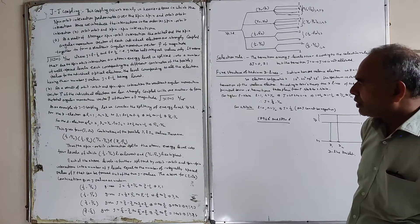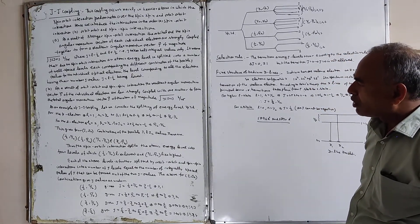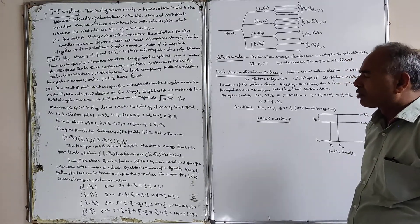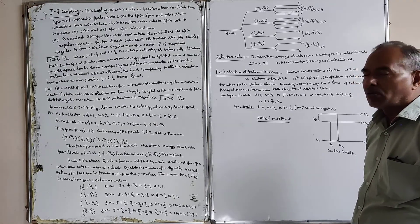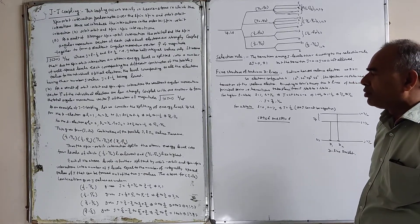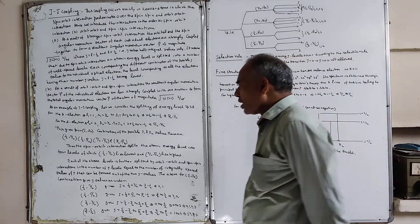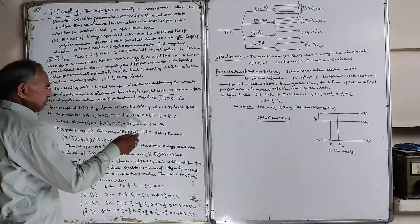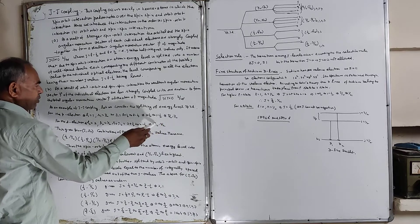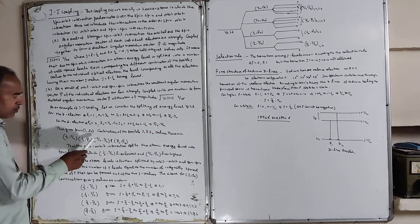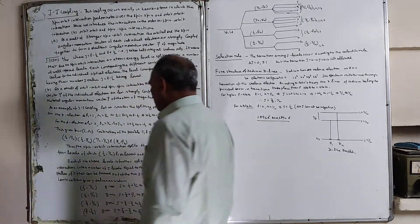For d, l2 equals 2 and s2 equals 1/2, so j2 varies from l plus s to l minus s, giving values from 2 plus 1/2 to 2 minus 1/2, that is 5/2 and 3/2. This gives the j1, j2 combinations. The possible j1 j2 value combinations are: (1/2, 3/2), (1/2, 5/2), (3/2, 3/2), and (3/2, 5/2), giving 4 energy levels.